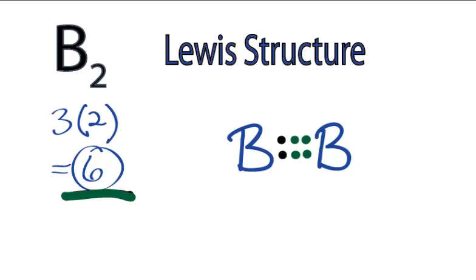We have our exception to the octet rule with boron, and that allows us to only have six valence electrons in the outer shell of each boron atom, and we achieve that by sharing three pairs of electrons to form a triple bond. This is Dr. B, and thanks for watching.